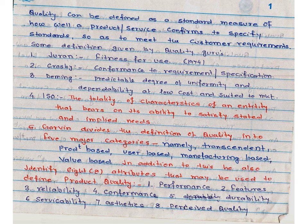Then, durability. Whenever we are going to purchase any product, we require durability — meaning how long does the product last, that is, the life of the product. Customers want products that perform satisfactorily over a long period of time. Examples include buildings, bridges, shoes, batteries, TVs, and washing machines.